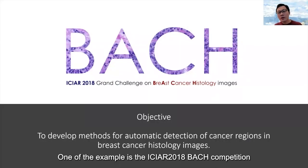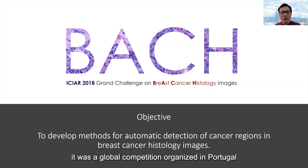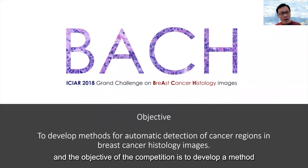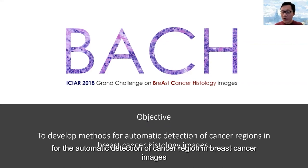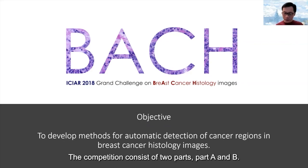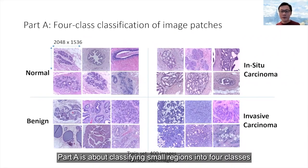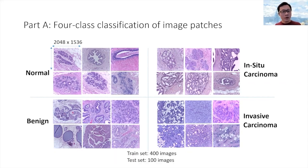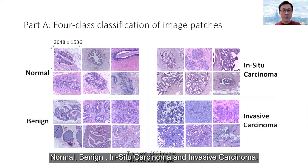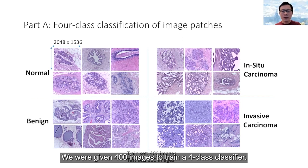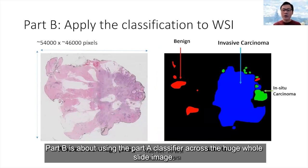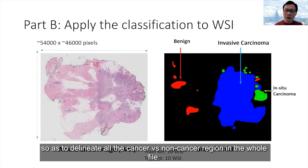One example is the ICIAR 2018 BACH competition, a global competition organized in Portugal. The objective is to develop a method for automatic detection of cancer regions in breast cancer images. The competition consists of two parts. Part A is about classifying a small region into four classes: normal, benign, in-situ carcinoma, and invasive carcinoma — each corresponding to a different stage of cancer progression. We were given 400 images to train a four-class classifier. Part B involves applying the Part A classifier across the whole huge whole-slide image to delineate all cancer versus non-cancer regions.